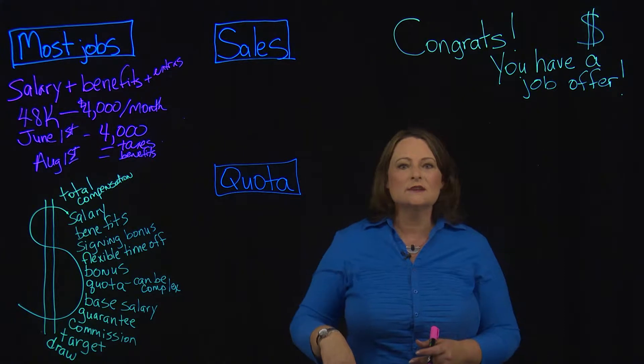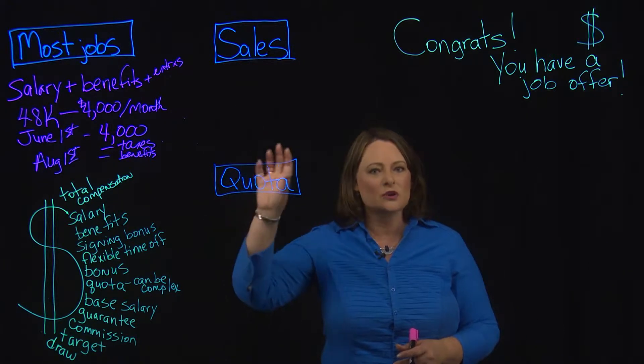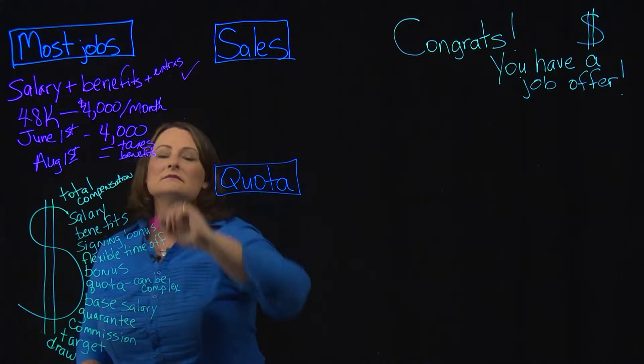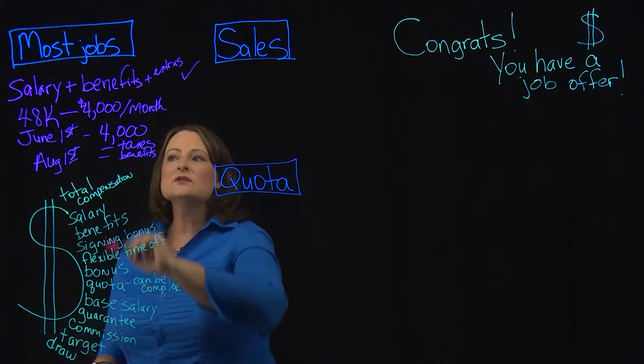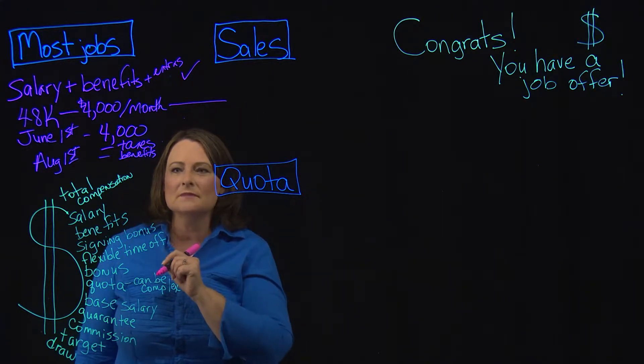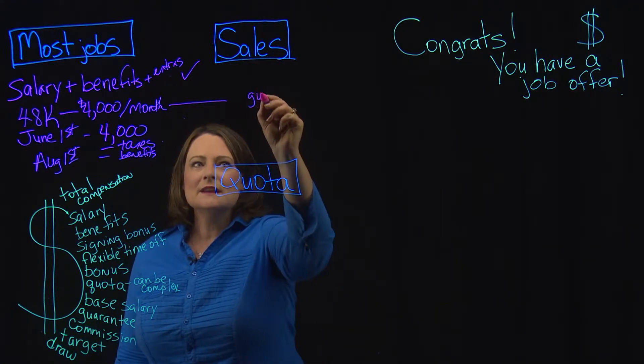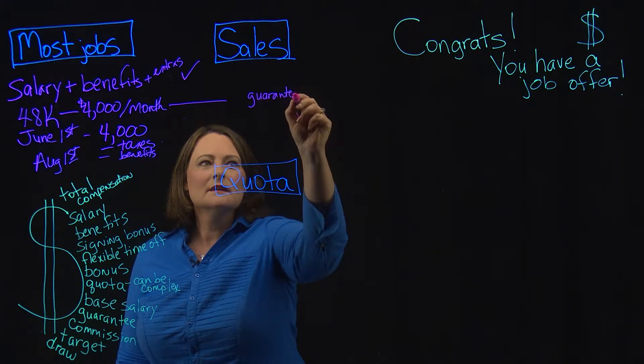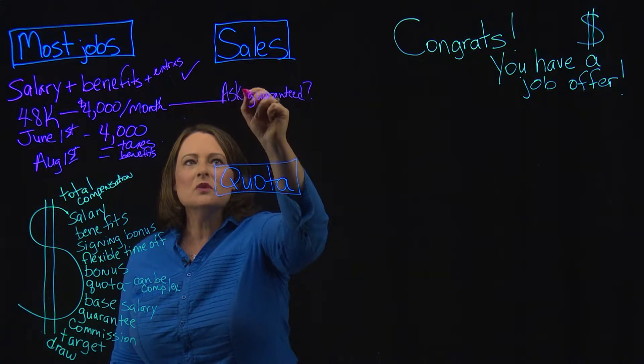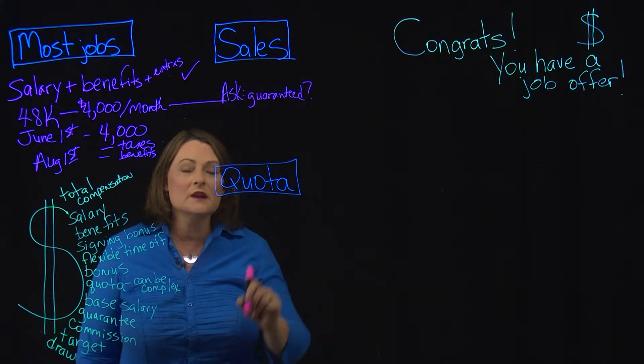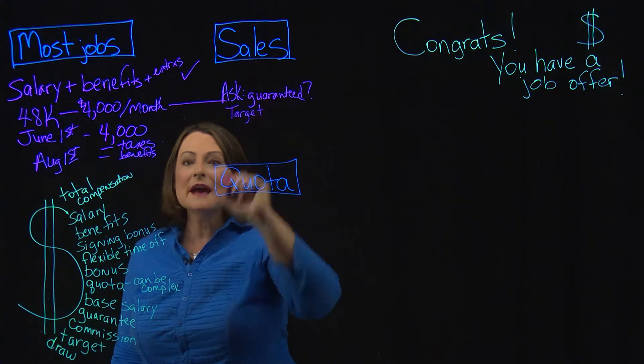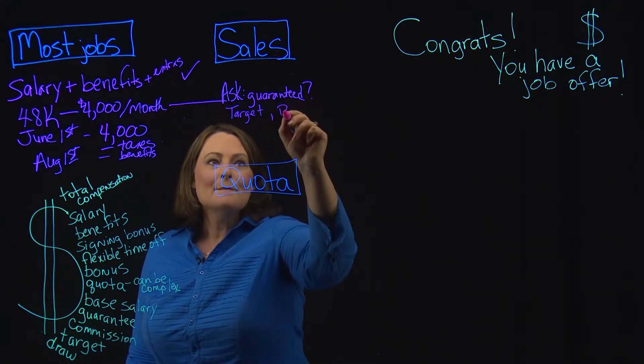So let's do a direct comparison here. How do the typical jobs where you have a salary plus benefits compare to sales? Well, first of all, this right here, exactly the same. Let's also assume that we have this $48,000 here in sales. But now I'm going to ask you to think about something. Is that guaranteed? I need you to ask a few really central questions when you hear that you're going to be making $48,000. Is it a guarantee? Is that my target salary? Or is that my base salary?